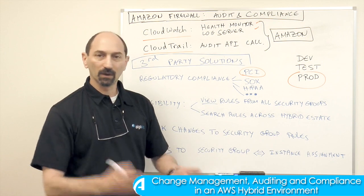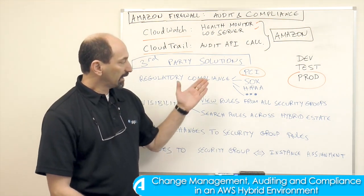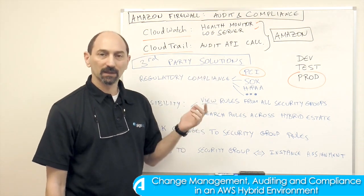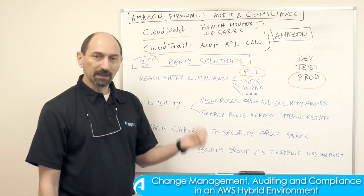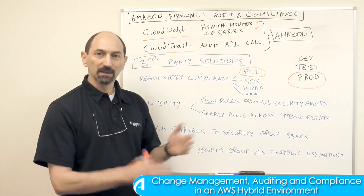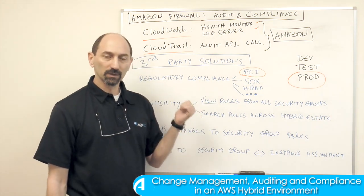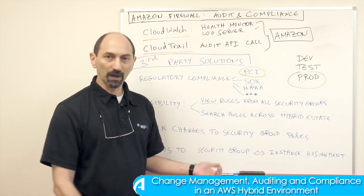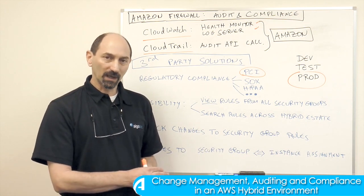There are multiple regulations depending on which business you're in, and to be able to use your Amazon Cloud for this type of data, that estate becomes part of your audit and compliance reporting. You need the right tools and systems and solutions to help you meet those requirements and to provide the reporting that the auditors are going to ask you for.